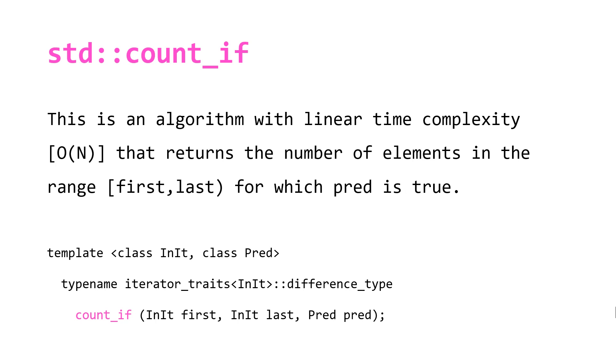std::count_if is a very similar algorithm with linear time complexity O(N) as well that returns the number of elements in the range first to last for which pred is true. The only difference here being that we have an underscore if and instead of a value this algorithm takes a unary predicate.